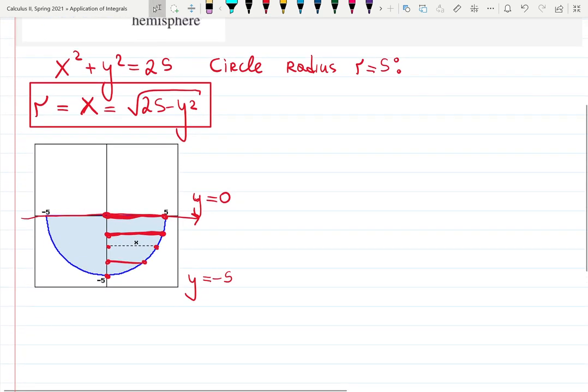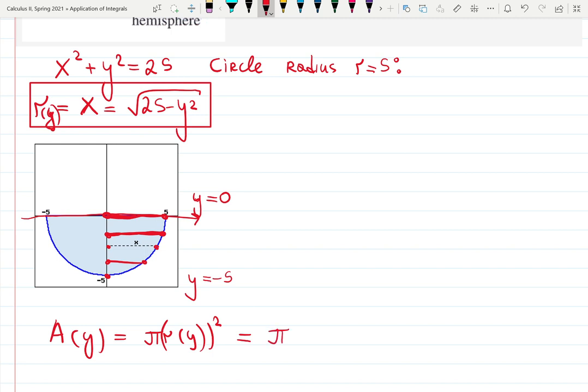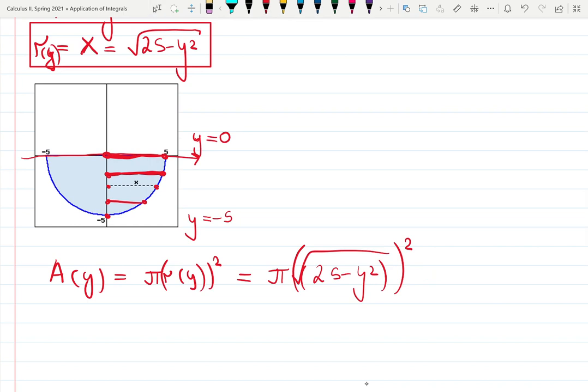Now we also know area. Area, A of y, will depend on how deep I'm looking at this slice. That's why it depends on y. It will be pi times r of y squared. But we just found r of y. So it's going to be pi times 25 minus y squared, with the square root squared. Or let's simplify. Area would be pi times 25 minus y squared. Area is in square feet units. That's also important.